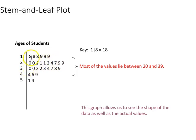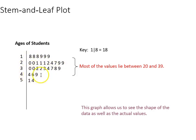We've got three eights, three nines, two zeros, three ones, two, and so on. These are the 20-year-olds, these are the teenagers, these are the 30-year-olds, those the 40-year-olds, and those the 50-year-olds.